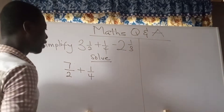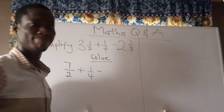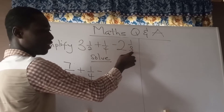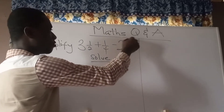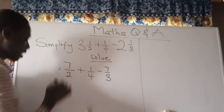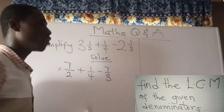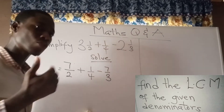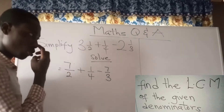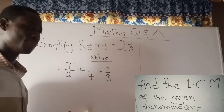Then minus — now let's convert the second mixed number 2 and 1/3 to an improper fraction. Multiply 2 by 3 to get 6, then add the numerator 1 to get 7, giving us 7 divided by 3. After reaching this step, we need to find the LCM — the lowest common multiple — of the denominators 2, 4, and 3.